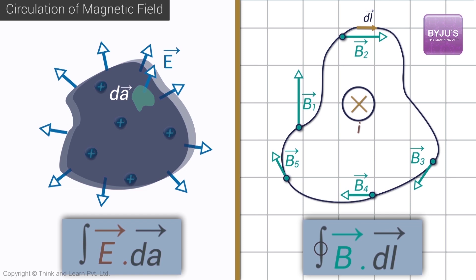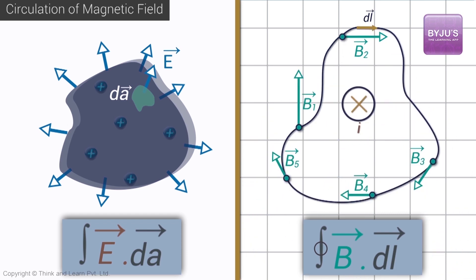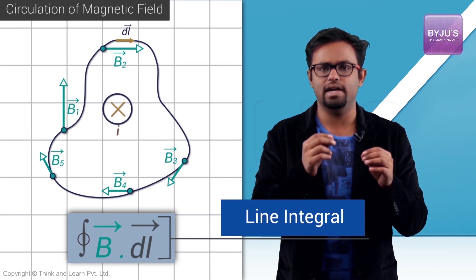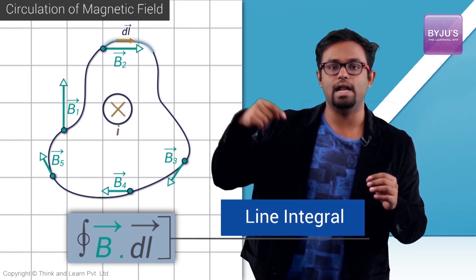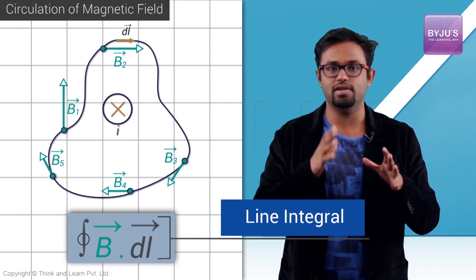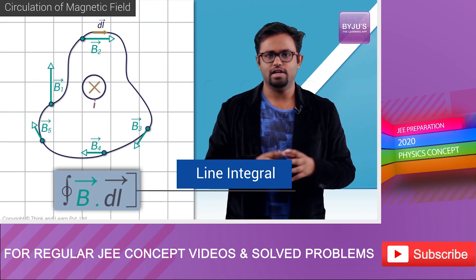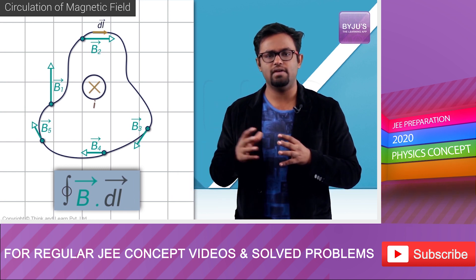Similarly, in case of magnetism we don't take an area, we take a loop and we have a magnetic field there. Instead of taking the area element which we used to take in the case of area, we take a DL element. This is a length vector along that loop and we find B dot DL, the dot product of the magnetic field with that DL, and we integrate it over the entire loop. This is nothing but a line integral, you'll learn about it later. This is called a line integral where you integrate a vector over a line or curve. So this is the circulation of magnetic field over any curve.